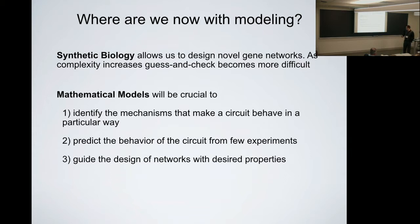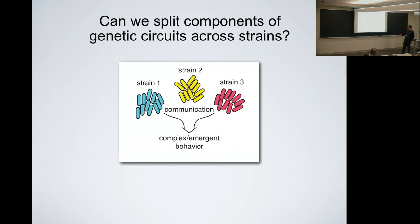Ideally, as engineers, we would like to design a network on paper or a computer and directly translate that into a biological system behaving as predicted. I'll focus on identifying mechanisms and predicting behavior. Most of what I'll discuss involves engineered microbial communities — different strains co-cultured together that communicate, with emergent behavior arising from their interaction. Grown individually, nothing interesting happens, but co-cultured, the communication closes a loop and produces particular behaviors.